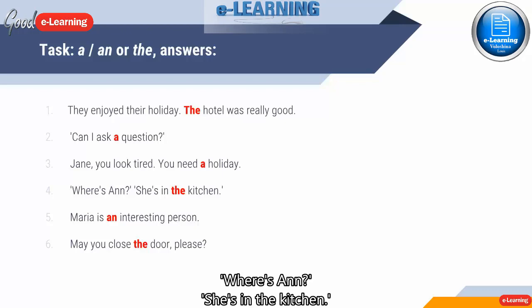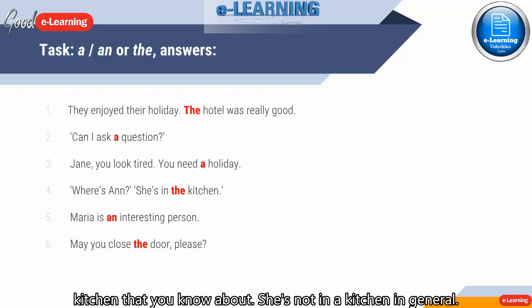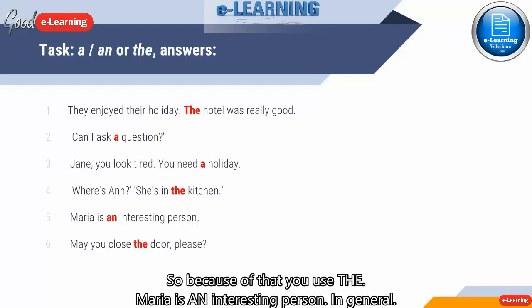Where's Ann? She's in the kitchen. You know where. When you say she's in the kitchen, you mean in our kitchen or in her kitchen, but in the kitchen that you know about. She's not in a kitchen in general. She's in one place at this time. You know where this place is.